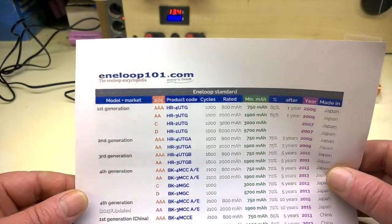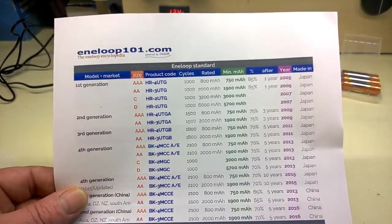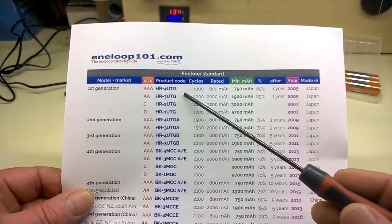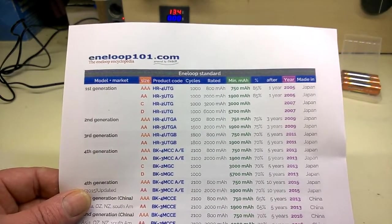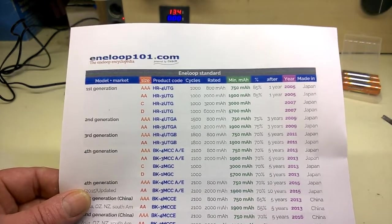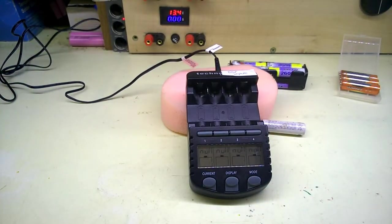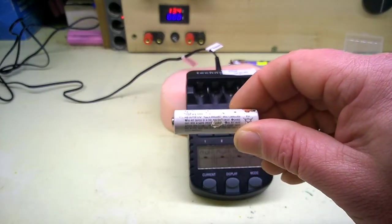That is a HR-3UTG. Just a word about this Eneloop - if you have a look at their website, lots of information there. The HR-3UTG is 2005 onwards, so these Eneloops are between 8 and 13 years old. Let's move them to the test.